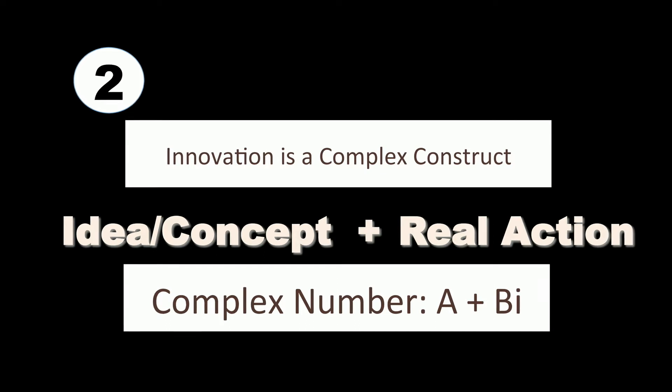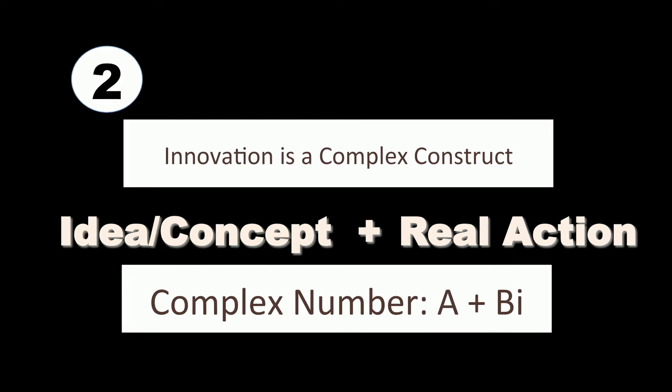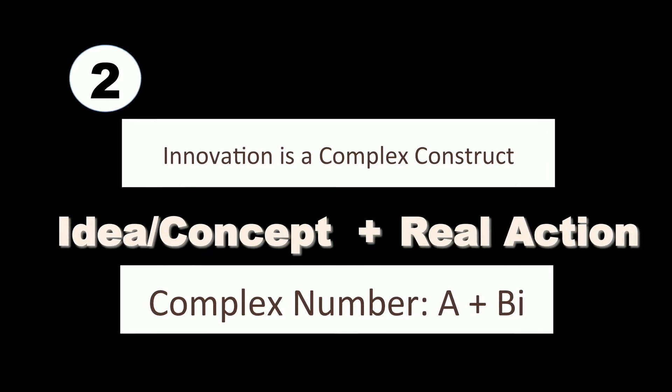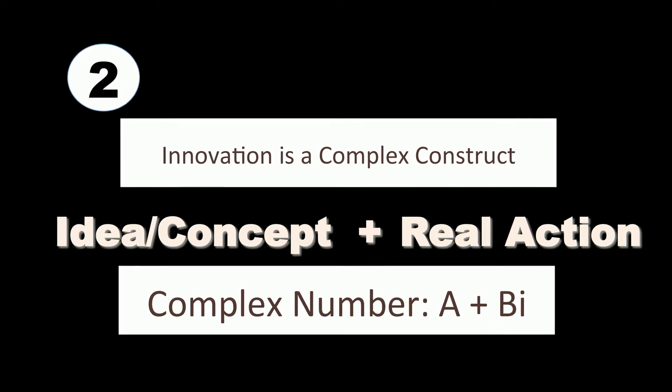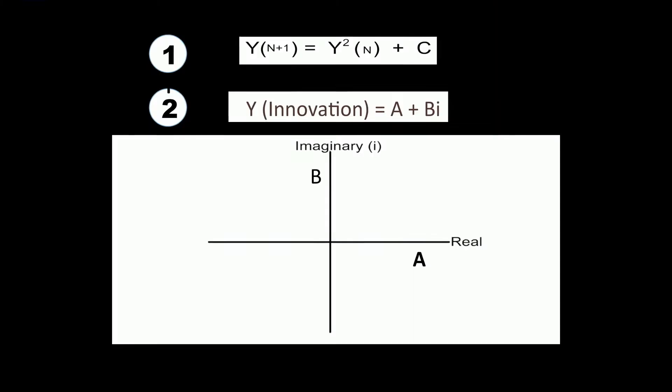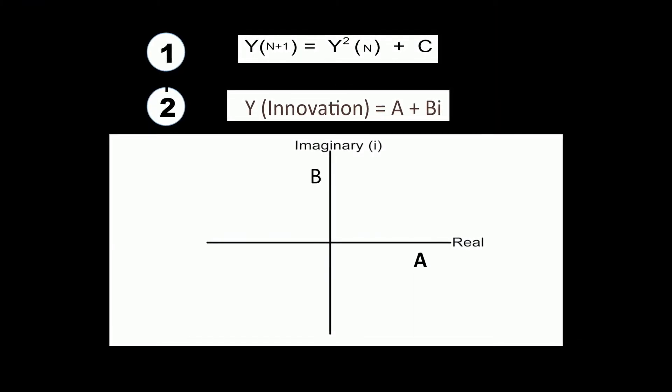Innovation is a complex construct. It is not just hard work, but it is also an idea — idea and hard work have to come together. Idea is an abstract term; hard work is visible and real. So we depict it mathematically as a complex number: A + iB. A is the coefficient of the real number — our real action, the work we do. And iB, where B is the coefficient of the imaginary number, represents the idea, the concept. Whenever mathematicians had to depict something complex, they put an i there — i being the square root of negative one, if you remember your grade 8 mathematics.